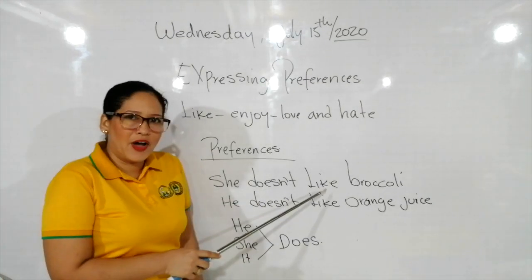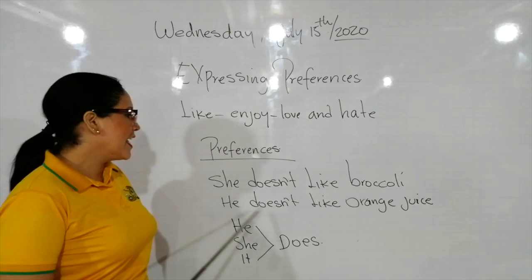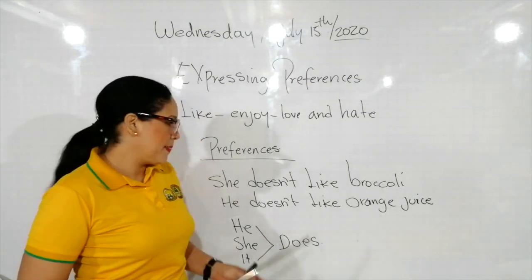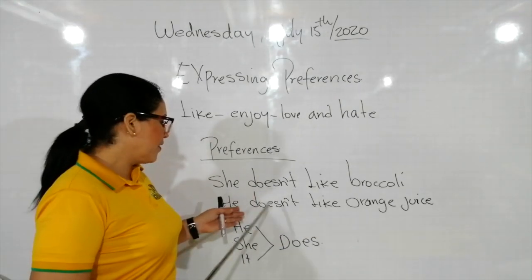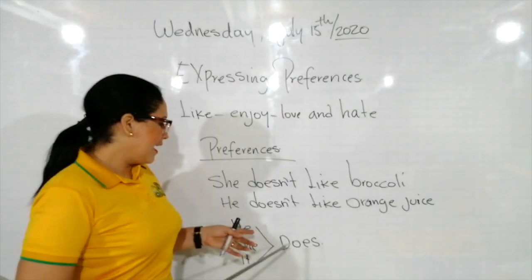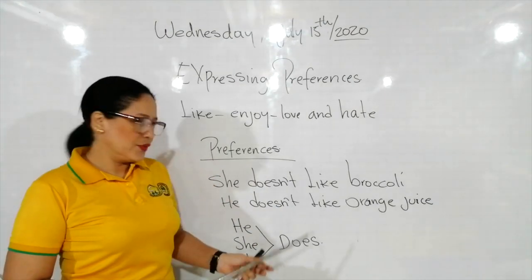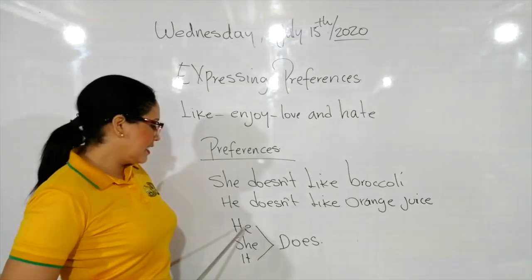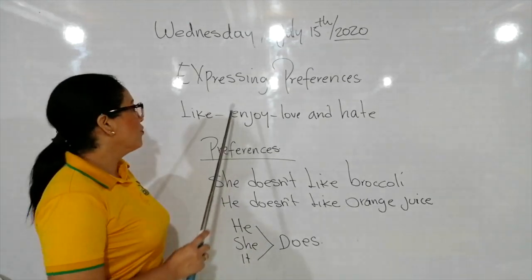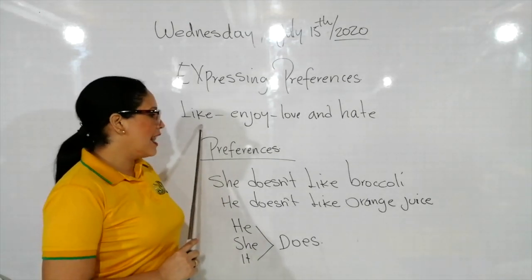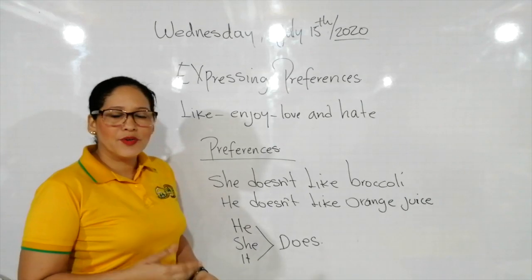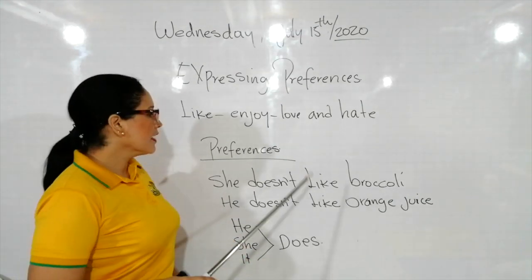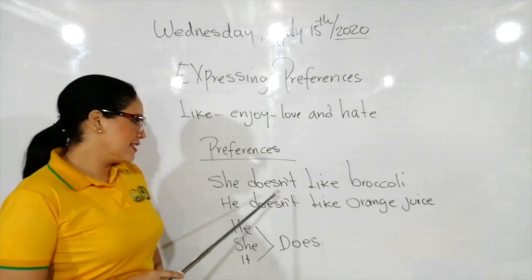She doesn't like broccoli. También tenemos: he doesn't like orange juice — a él no le gusta el jugo de naranja. Cuando estamos en tercera persona para hacer una negación, usamos el auxiliar does. Las terceras personas son he, she, it. Vamos a trabajar con like y dislike — don't like, doesn't like — para estos ejercicios.